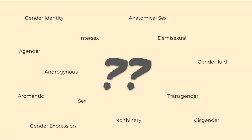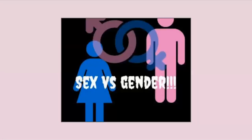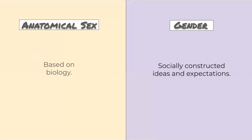To start, I always like to explain the difference between sex and gender, because they're oftentimes used interchangeably but they're not the same thing at all. Sex is in reference to biology, and gender is socially constructed ideas and expectations based on anatomical sex. For example, anatomical sex includes male and female, but gender refers to ideas of what is masculine or feminine, which differs from culture to culture — it's a social idea.